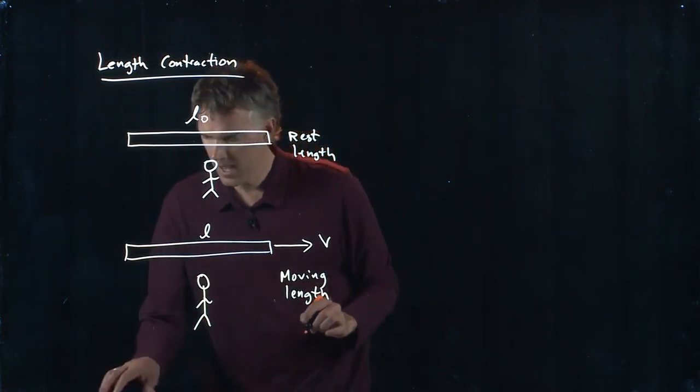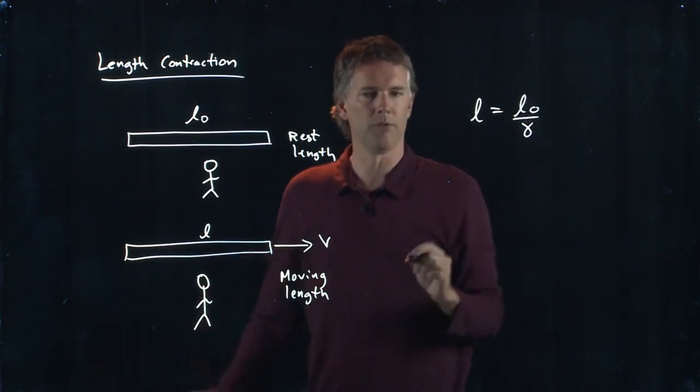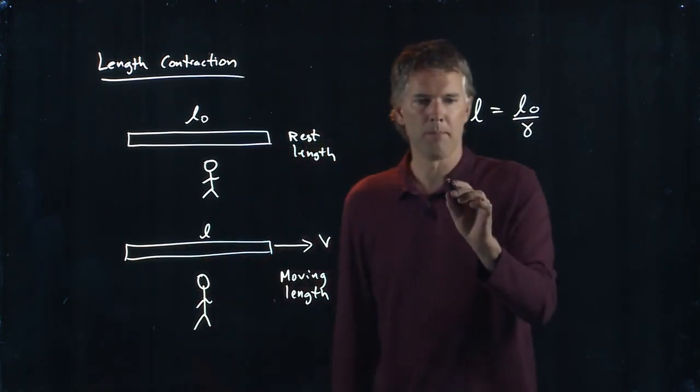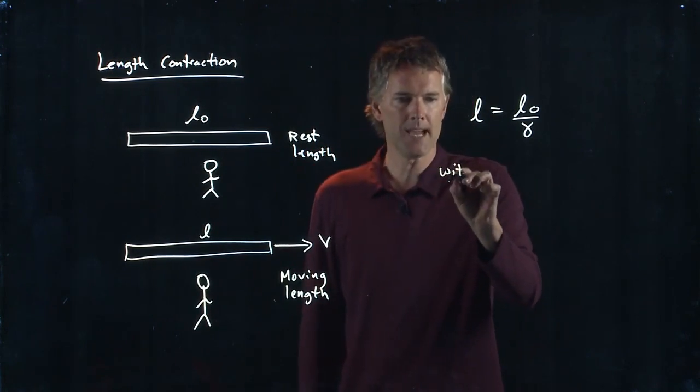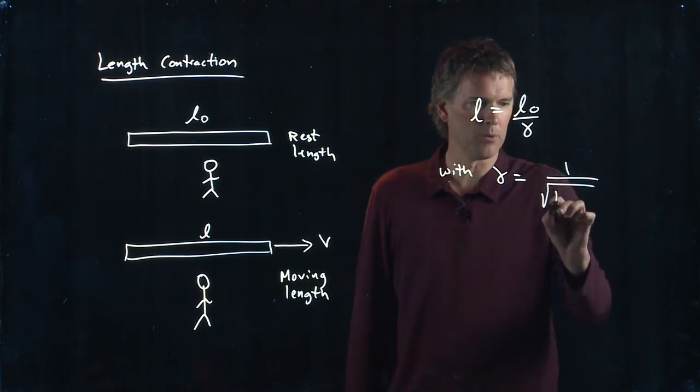The relationship is: L equals L-naught over gamma. Remember, gamma is one over the square root of one minus V-squared over C-squared.